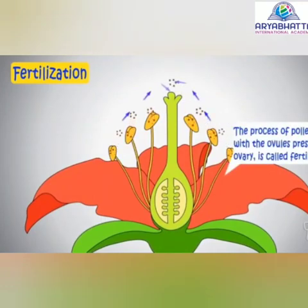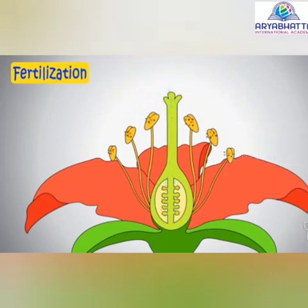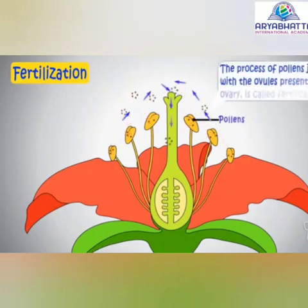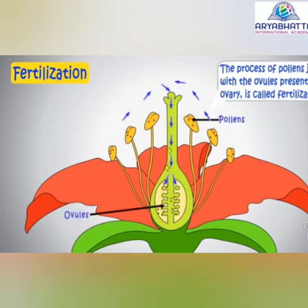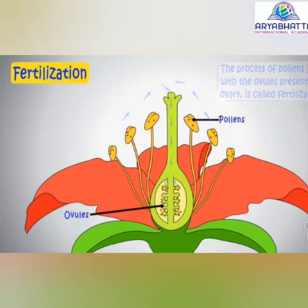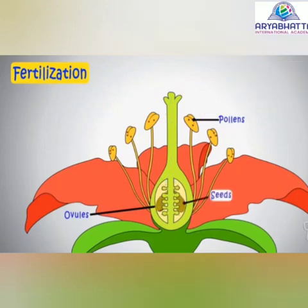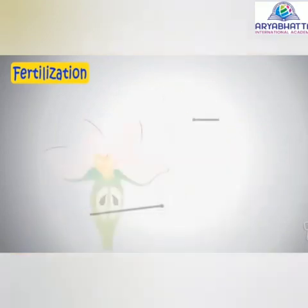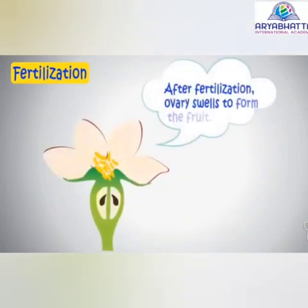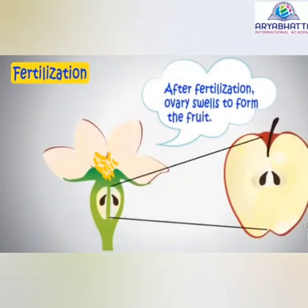The ovary contains the female reproductive cells called ovules. When pollens from the anther of the stamen join with the ovules present in the ovary, we call it fertilization. Fertilization forms the seeds inside the ovary, and after fertilization, the ovary changes into a fruit — that's why seeds are found inside the fruit.